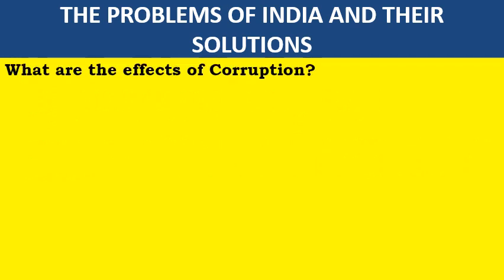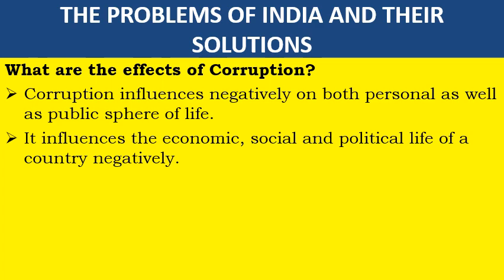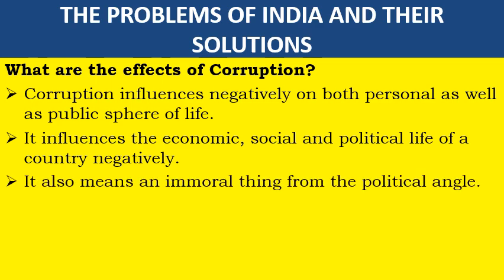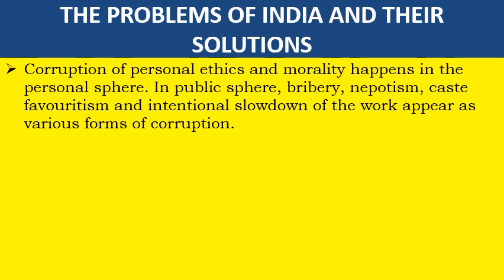What are the effects of corruption? Corruption influences negatively on both personal as well as public spheres of life. It influences the economic, social, and political life of a country negatively. It is also an immoral thing from the political point of view. Corruption of personal ethics and morality happens in the personal sphere. In the public sphere, bribery, nepotism, caste favoritism, and intentional slowdown of work appear as various forms of corruption.